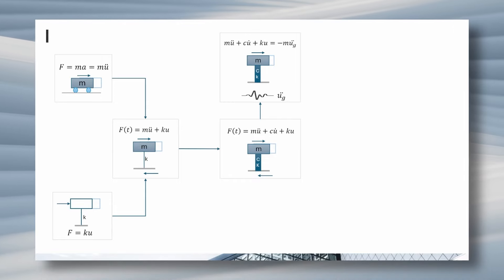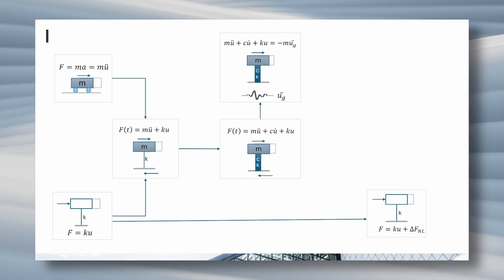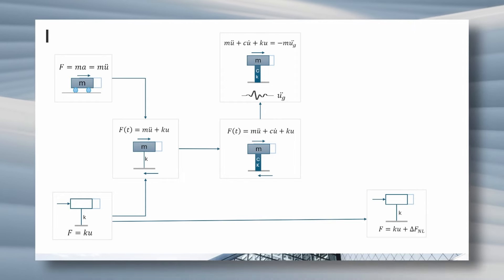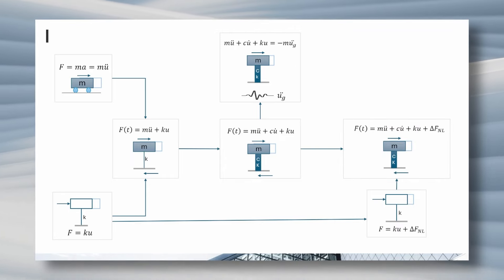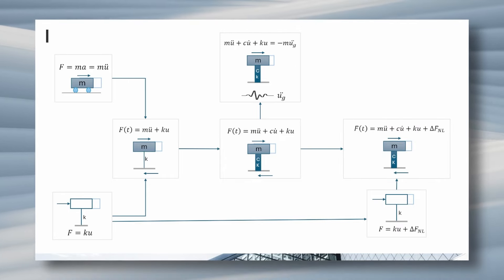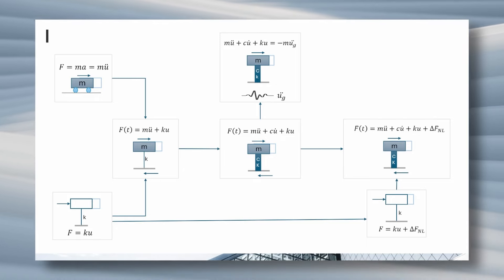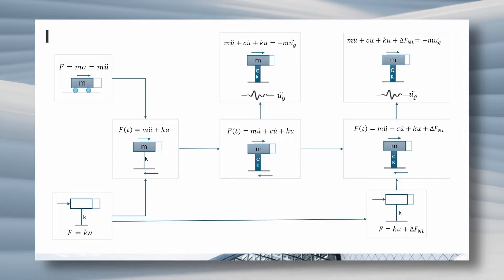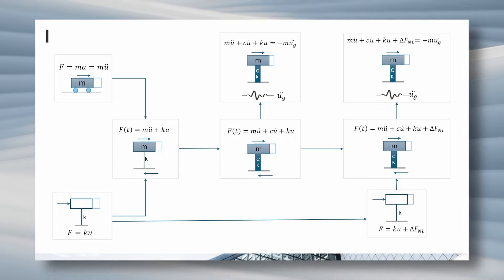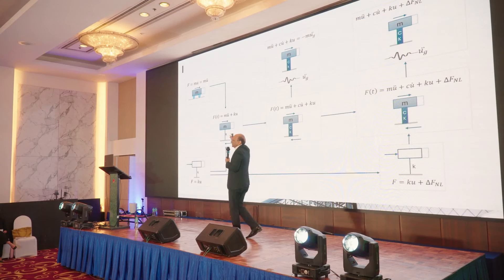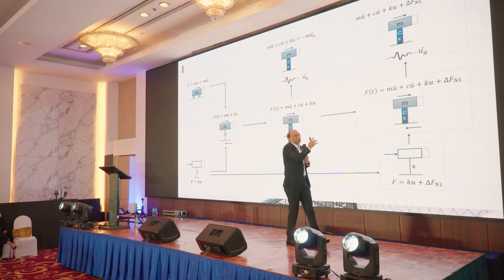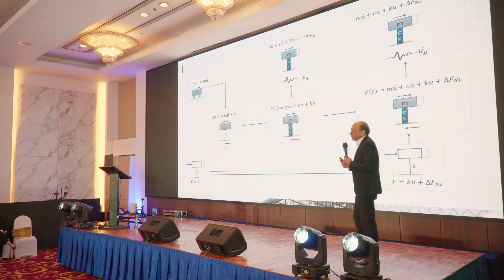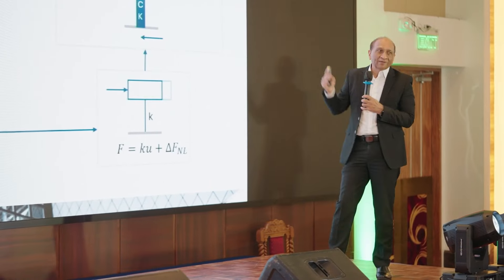We add nonlinearity to the static system, then combine it with dynamics to get the full nonlinear dynamic equation, and then add ground motion to get the complete ground motion equation. From Hooke and Newton all the way to the full nonlinear dynamic equation took several years, multiple mathematicians, and significant testing — until we arrived at that point.